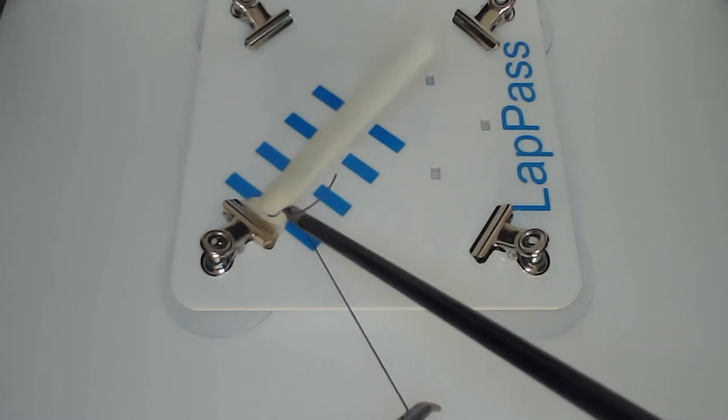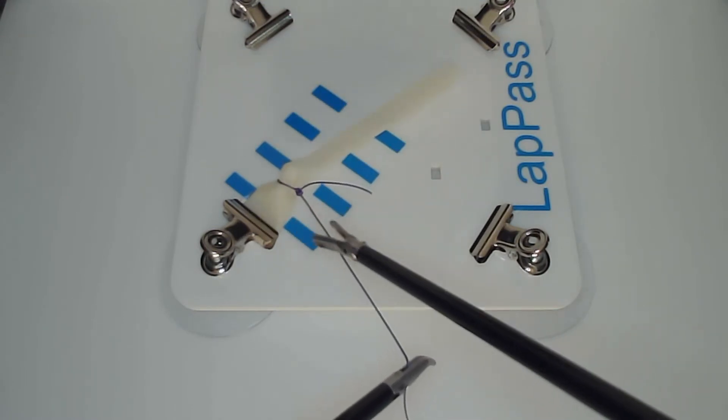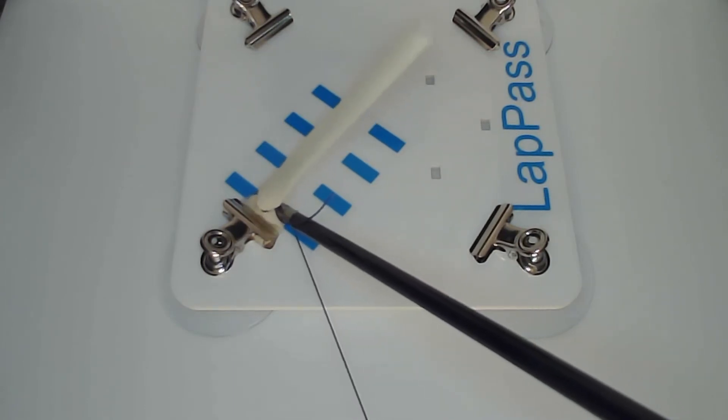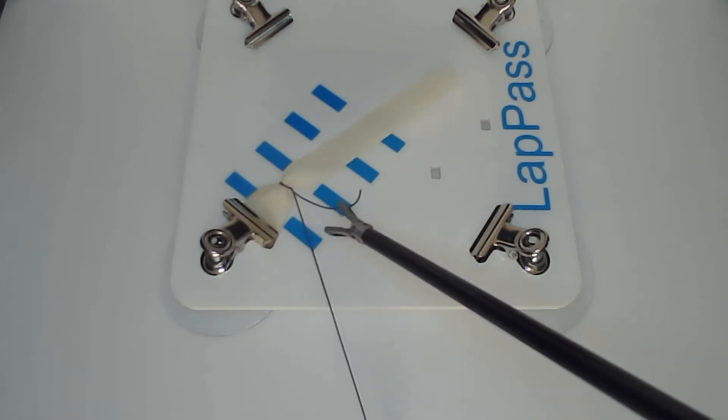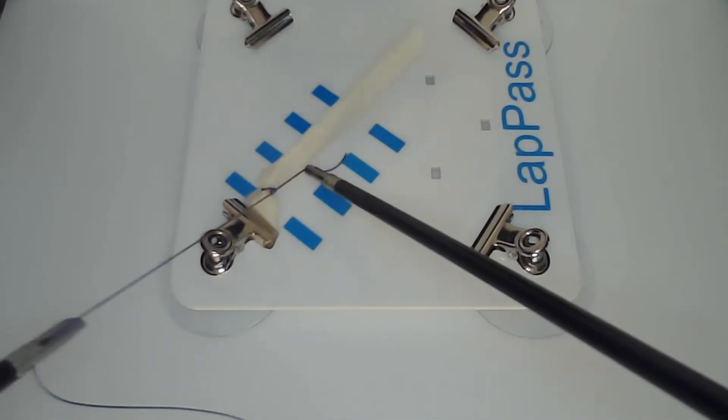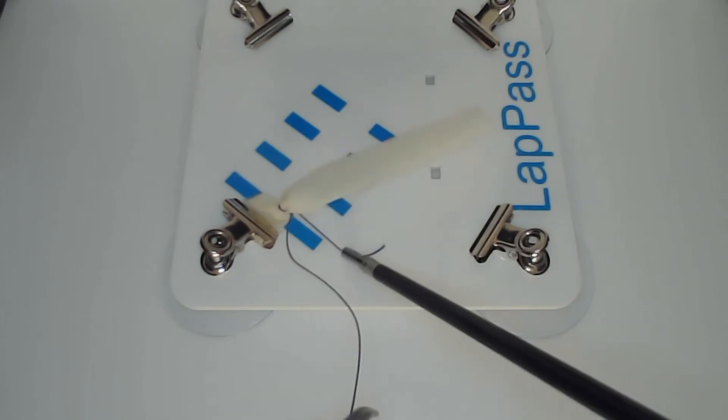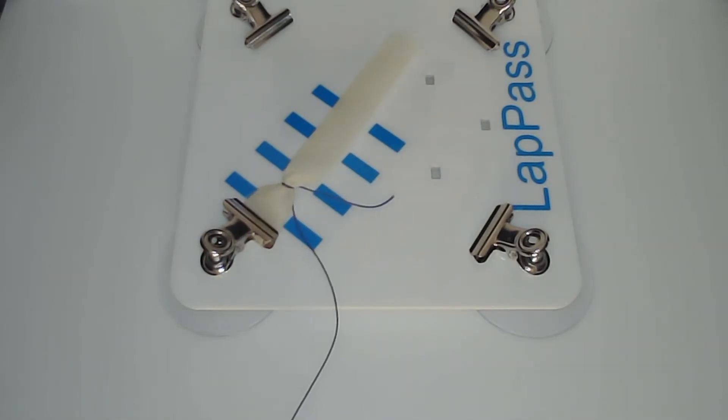As you can see on this model, it's designed to simulate a laparoscopic appendicectomy. You have four lines which create three separate zones: the proximal zone where we're suturing at the moment, the middle zone, and then the distal zone.